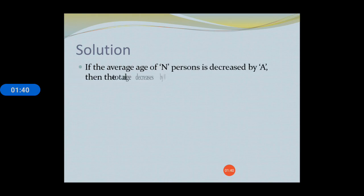Let us understand the shortcut key. If the average age of n persons is decreased by a, then the total age decreases by n into a years and vice versa.